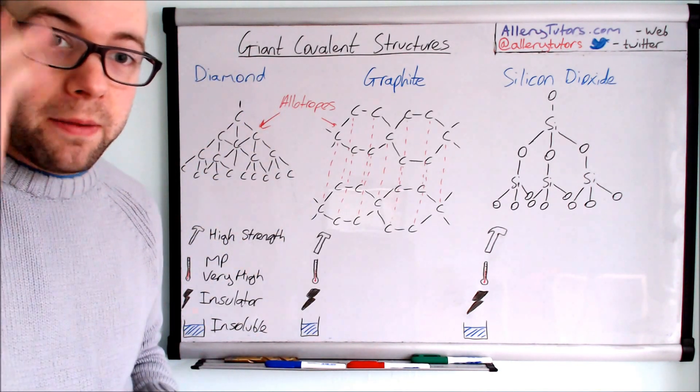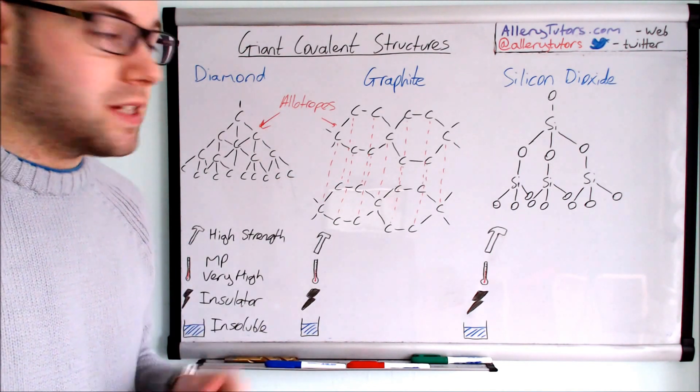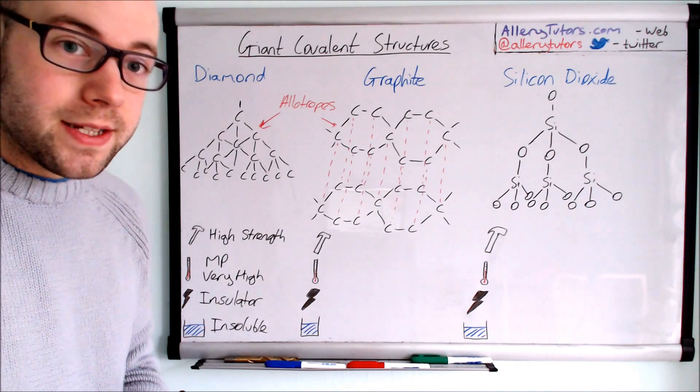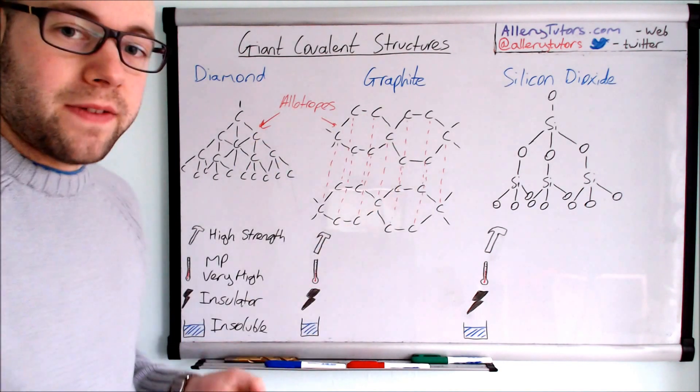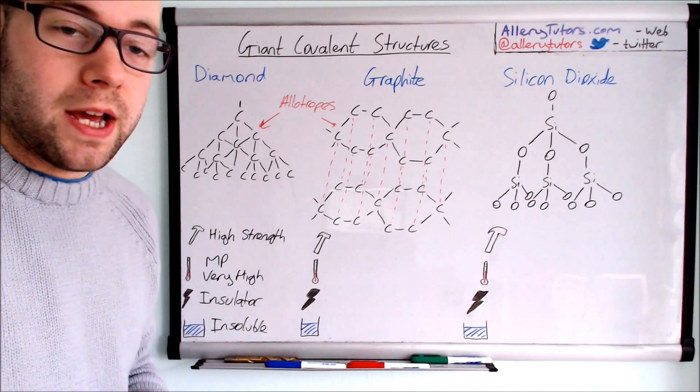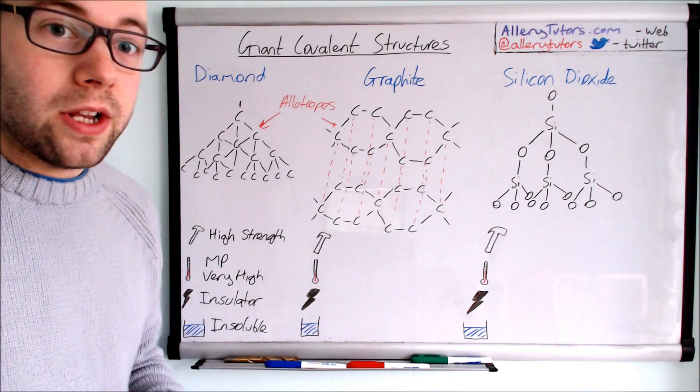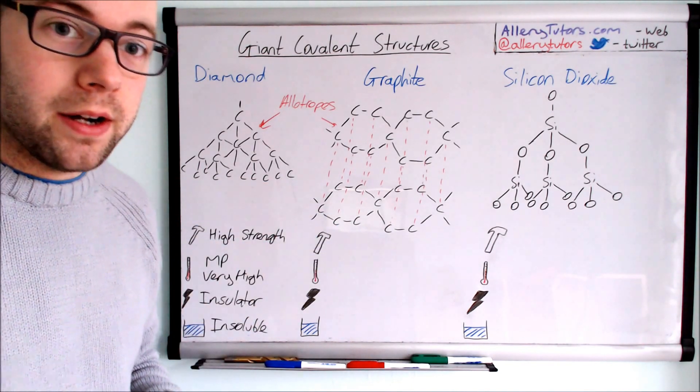Looking at the other allotrope of carbon, which is graphite. Graphite is slightly different. The structure is layered. You have weak forces between a set of hexagons which form in layers. Graphite is used in pencils. The layers are quite weak, so they'll slide off quite easily, and that's how you can leave a mark on the paper.